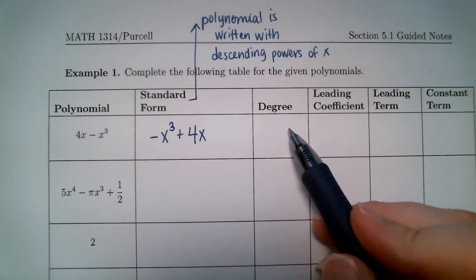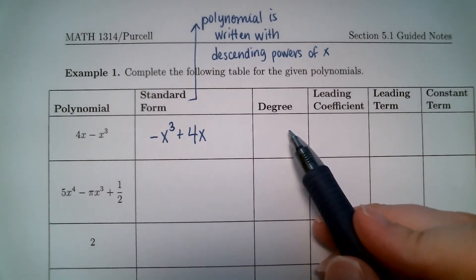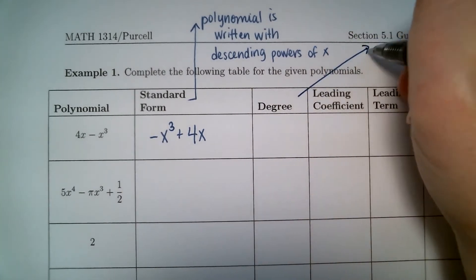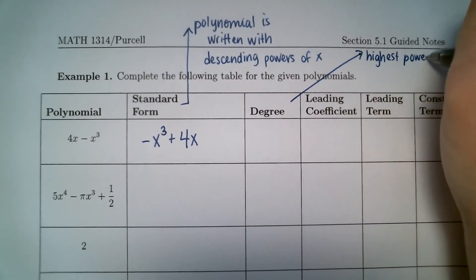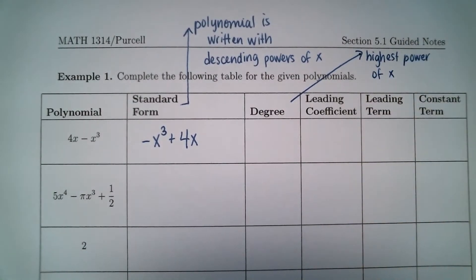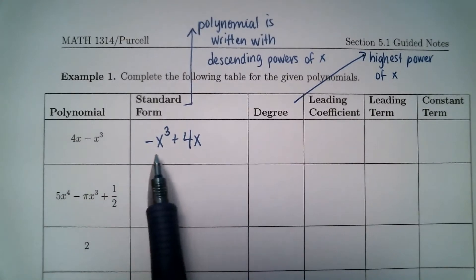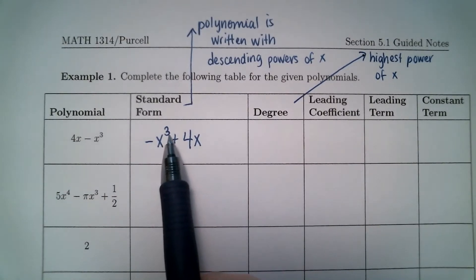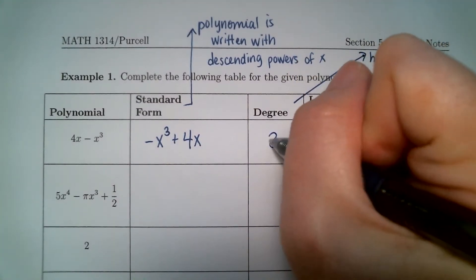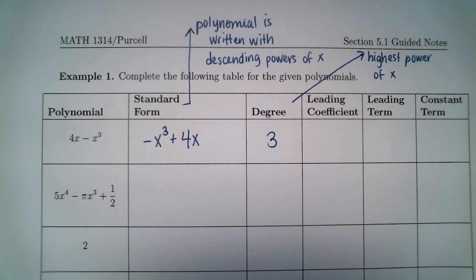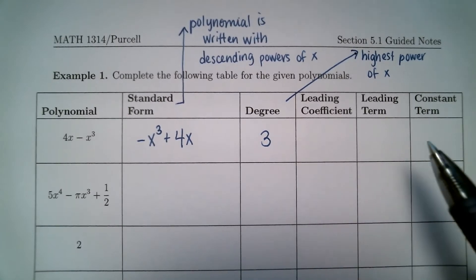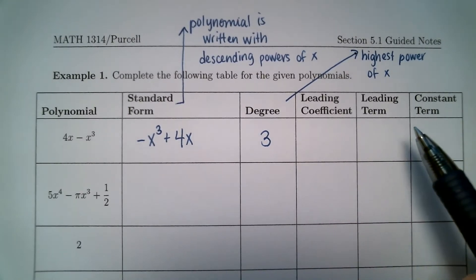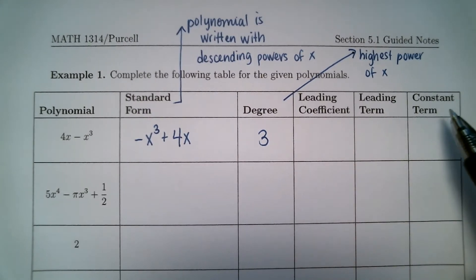Degree is the highest power of x that you see in the polynomial — it's very important for polynomials. When you look at the standard form here, the degree is 3, since the highest power of x is 3. This is a third degree polynomial. Degree is just a number.